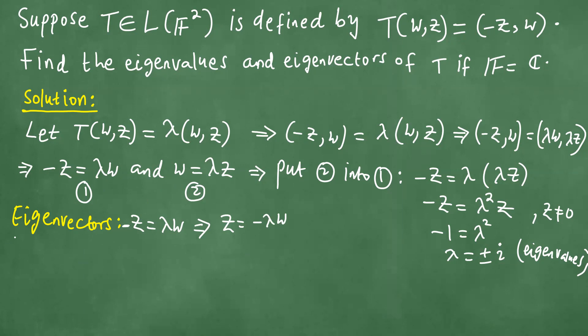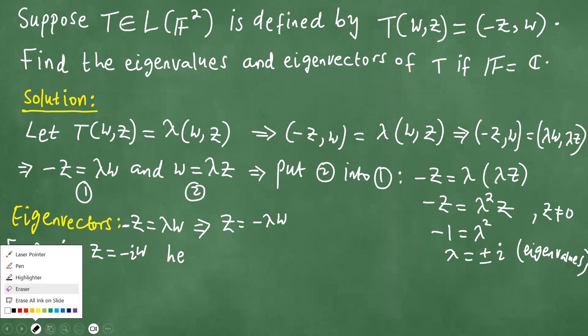We have two cases. For λ = i, we have z = -iw. If this is true, then we have the following.